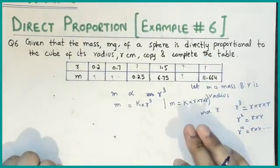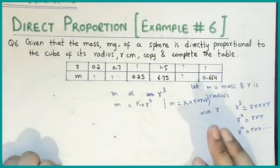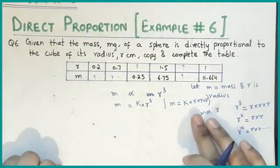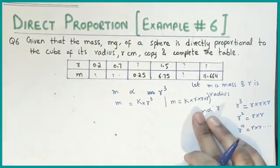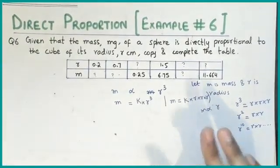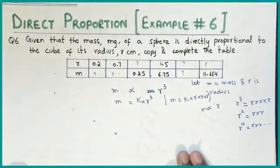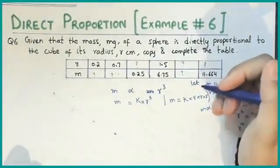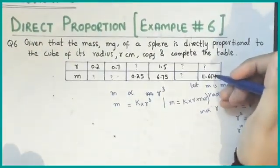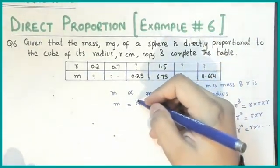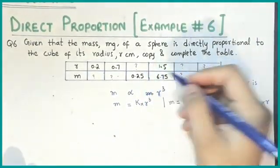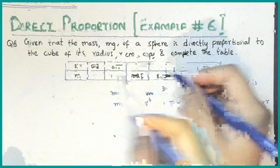This is our general equation. Until we know the value of k, we will not be able to find any answer. So we need to find k first.